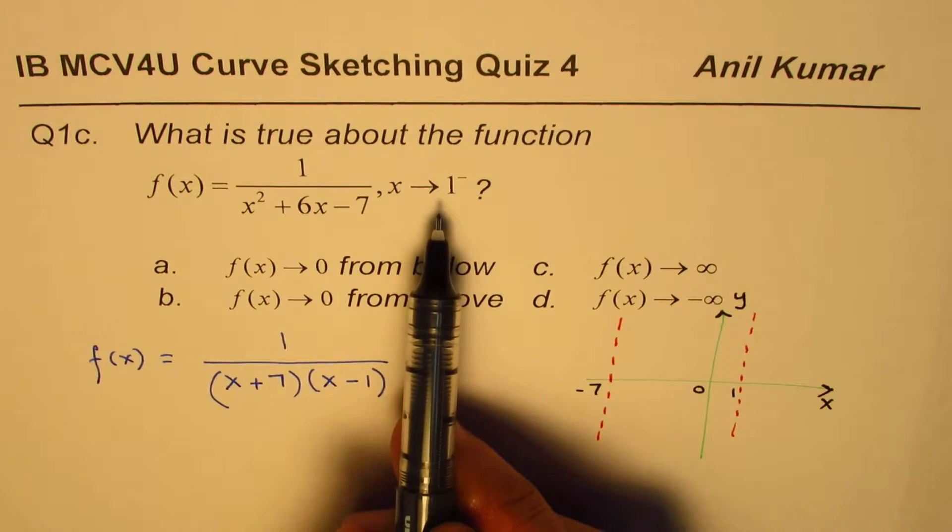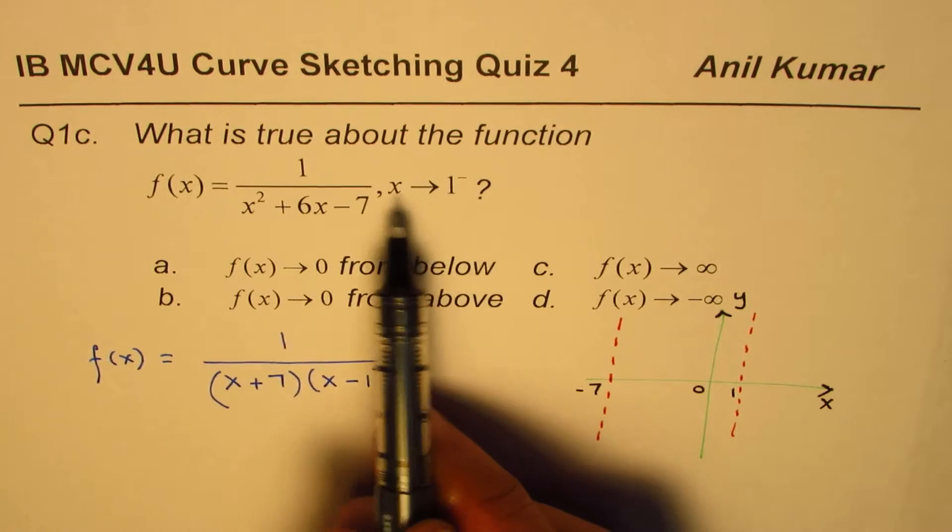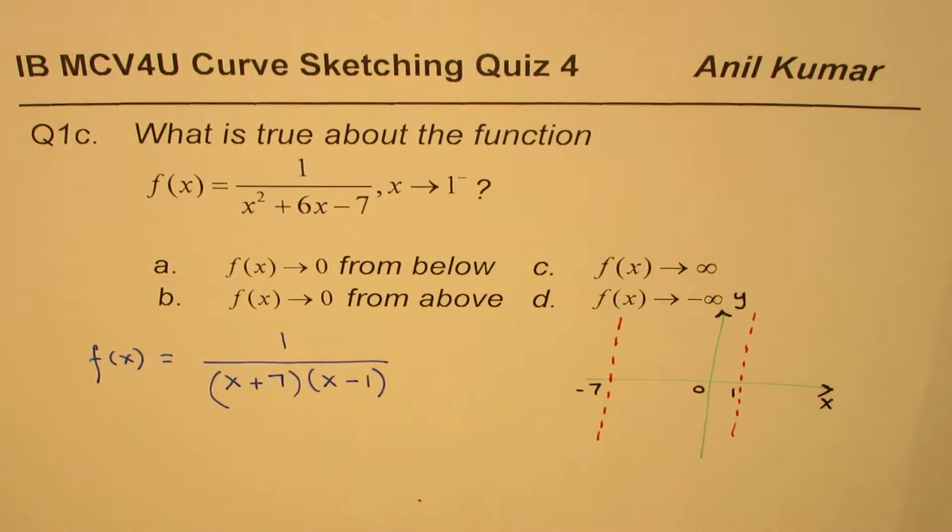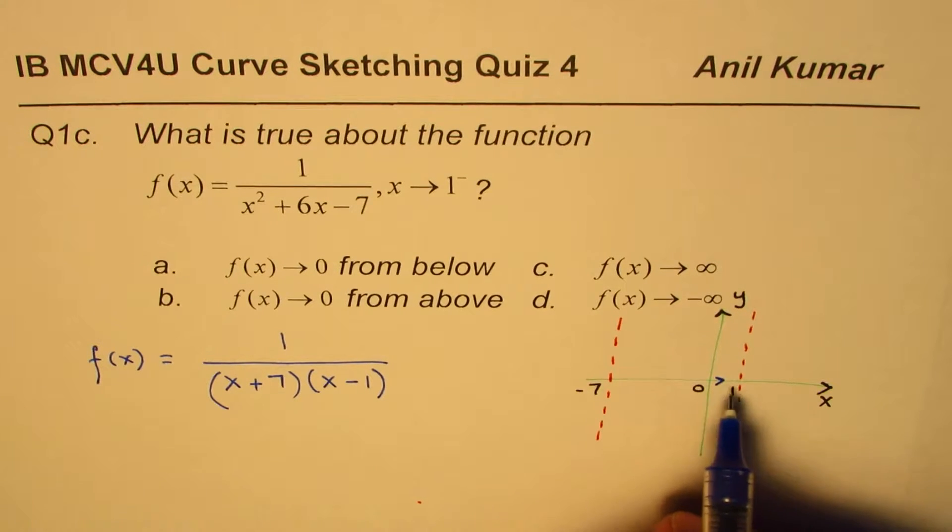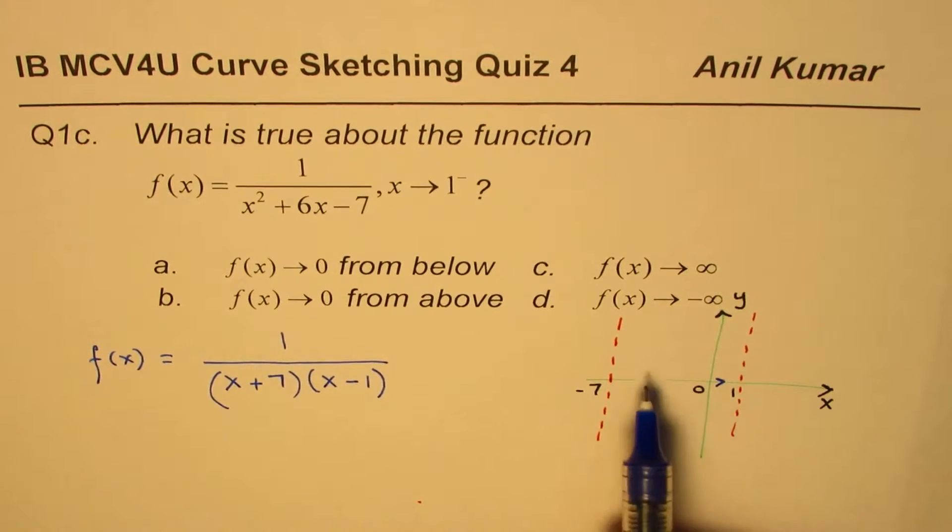So, now we need to find what is the behavior of the graph when x is approaching 1 from the negative side, means left side. So, when you are approaching from this side, what is the behavior? So, within this interval, correct?